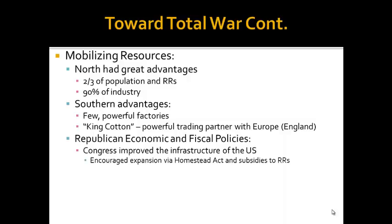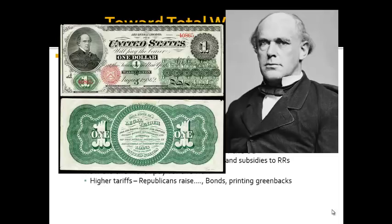Congress improved the infrastructure of the United States during the Civil War — something that would have made Henry Clay very proud. They encouraged expansion via the Homestead Act, which gave 160 acres of land to settlers moving west. They also gave subsidies and land to railroad companies. To pay for the war effort, the North used high tariffs. Keep in mind that Congress was dominated by Republicans, and Republicans raise tariffs — RR, Republicans raise.